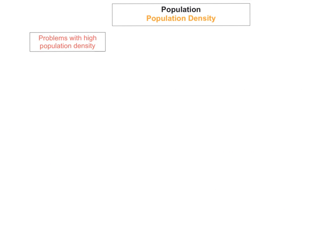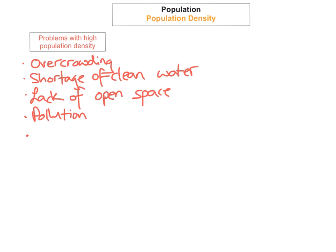Population density refers to the average number of people living in a square kilometer. Some of the problems with high population density include overcrowding, a shortage of clean water, a lack of open space for recreation and housing, and a lot of pollution.